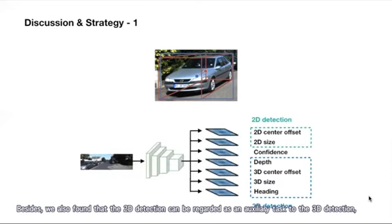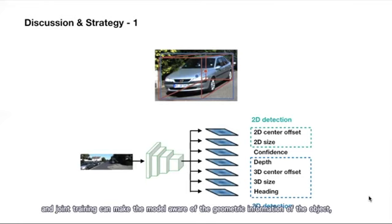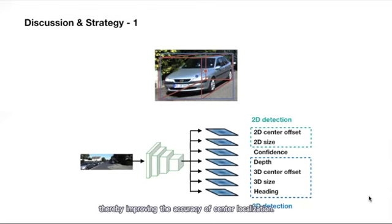Besides, we also find that 2D detection can be regarded as an auxiliary task to the 3D detection. The joint training can make the model aware of the geometric information of the objects, thereby improving the accuracy of the center localization.